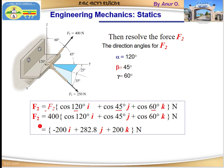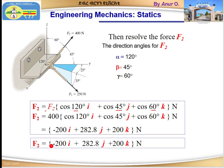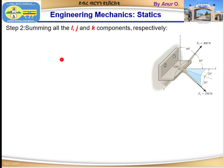Therefore F2 equals minus 200i plus 282.8j plus 200k newtons. We have now expressed both F1 and F2 in Cartesian vector form — this is one answer to the question. The next step is to determine the resultant vector by adding like terms together: the x-components with x, y with y, and z with z.